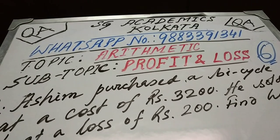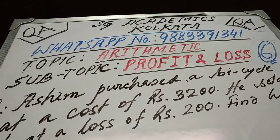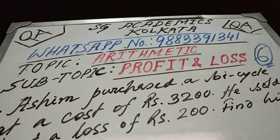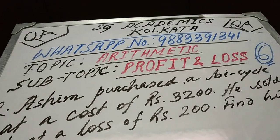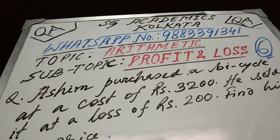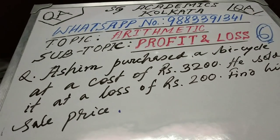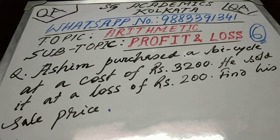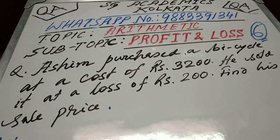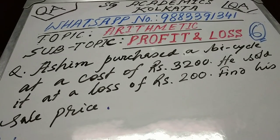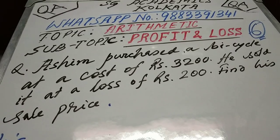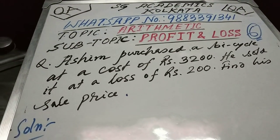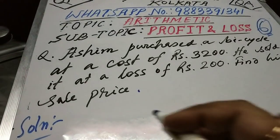You can put through your messages on this WhatsApp number regarding anything on this video. Friends, we have a problem to solve. It goes like: Ashim purchased a bicycle at a cost of rupees 3200 and he sold it at a loss of rupees 200. Find his sale price.